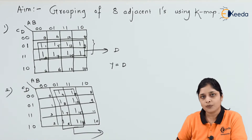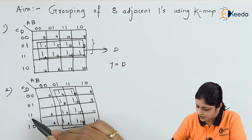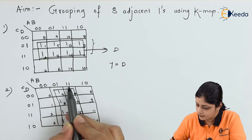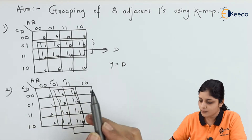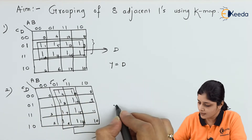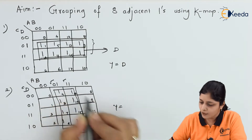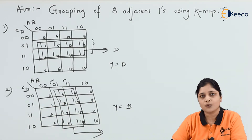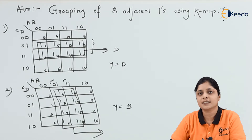According to the rules, you can make a group. Now focus on the variables: C and D are changing. A is also changing — A goes from 0 to 1, so A is changing. B remains 1 throughout, so Y = B is the answer for grouping of 8 adjacent ones.